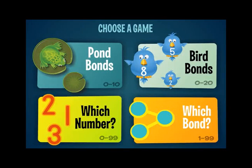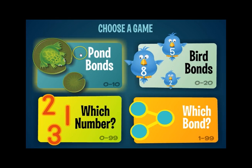Hello and welcome to this demonstration of Number Bonds by Crystal Springs Books. There are four games to choose from. Pawn Bonds addresses number bonds or fact families from 0 to 10. It's most appropriate for primary grades and it's the most concrete game.